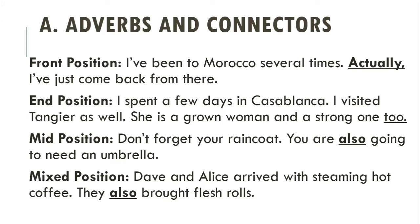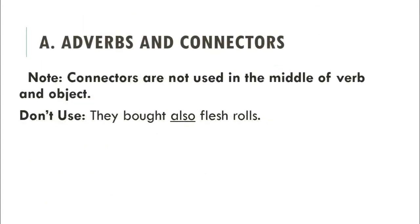So dear students, you can use sentence connectors in different positions according to the circumstances. Here is an important note: connectors are not used in the middle of verb and object. You can use connectors at the very beginning of the sentence, at the end, in the middle, and in the mixed position. But you cannot use sentence connectors between verb and object. For example, 'They brought also flash rolls' is incorrect.